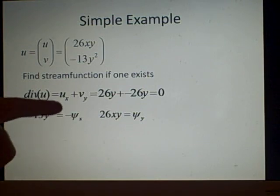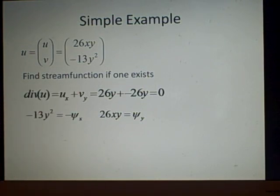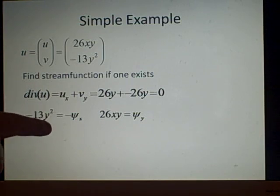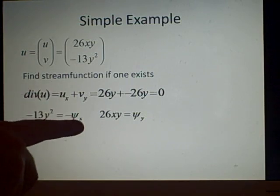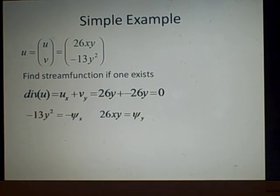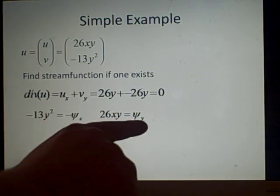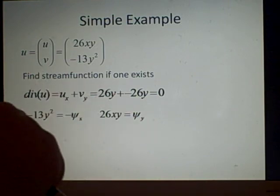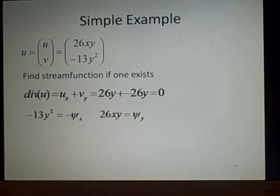We can integrate this one with respect to x. We can cancel off the minuses because they're on both sides. Integrate this one with respect to x to get phi, which gives us 13xy squared. Or we can do it with this one, so we integrate with respect to y, which will give us 13xy squared. They're exactly the same, so we can do either one of them.